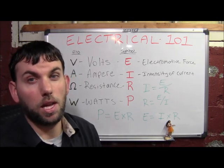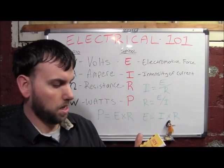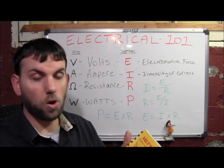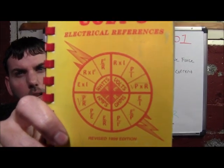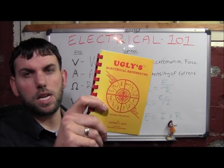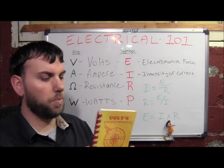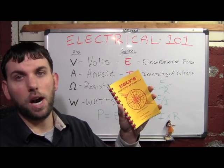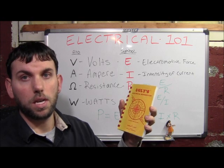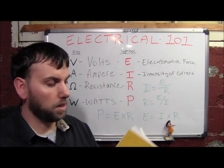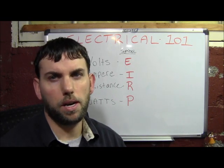I want to tell you guys about a book I recommend: Ugly's Reference Book. I have the 1999 edition by George Hart. You can see the Ohm's Law chart right there on the front — it gives you everything for calculating what you need. This is a really great book. I highly recommend it to anyone doing any electrical work. It's one of the best reference guides I've ever come across. I've bought probably 40 or 50 of these over the years and given them out to students and apprentices.